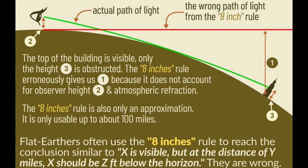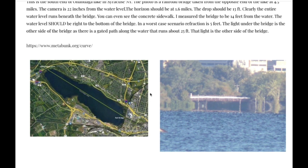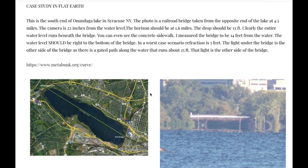I want to use an example here on one of the flat earth forums. Someone did an experiment on Onondaga Lake in Syracuse, New York, and he was pretty careful, so I'll give him credit. The photo here is a picture of the lake, and it's 4.5 miles from one side to the other, and he's looking at a railroad bridge at the opposite end of the lake. He reported the camera was 22 inches from water level, and according to his estimates, the horizon should be 1.6 miles and the drop should be 13 feet.